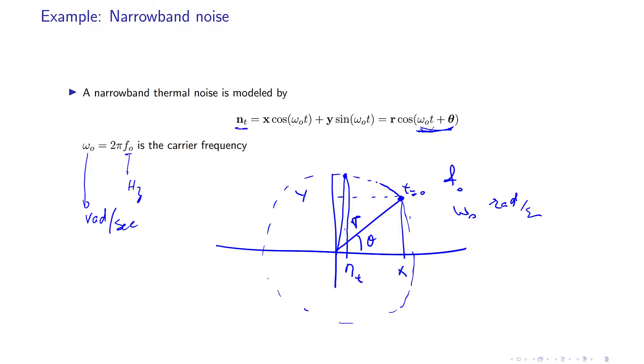So n_t is basically the x coordinate of the random pair which is rotating with the speed of f_0 times per second.